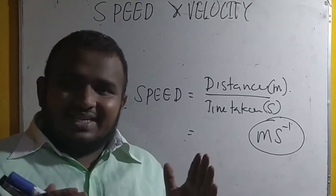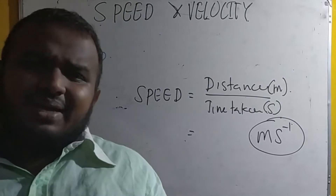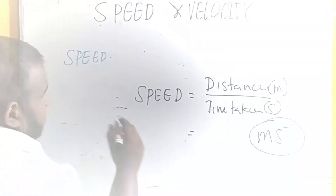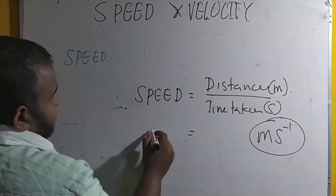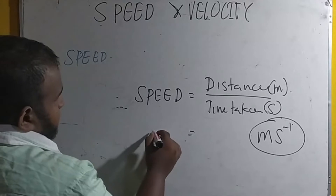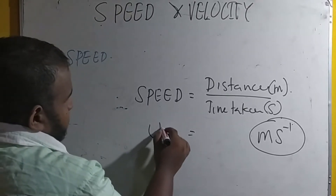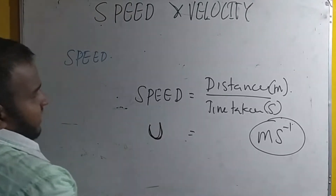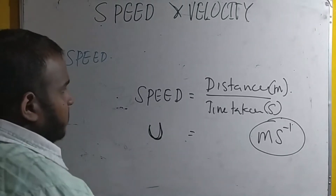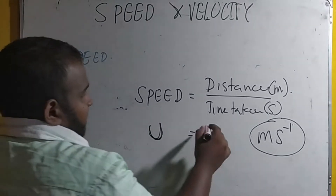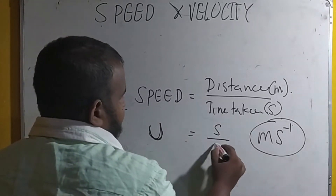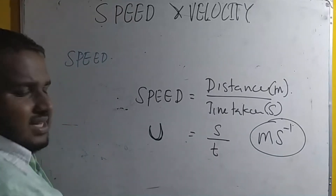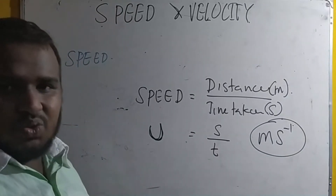Very simply, speed is measured in meter second minus one. Usually, speed is labeled as u, distance as s, and time taken as t. So the equation is u equals s over t.